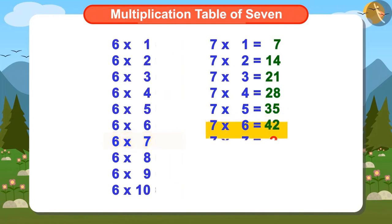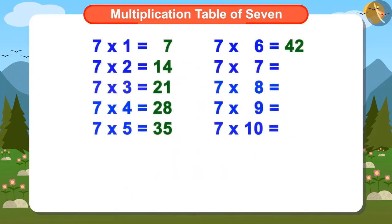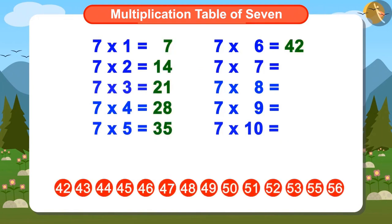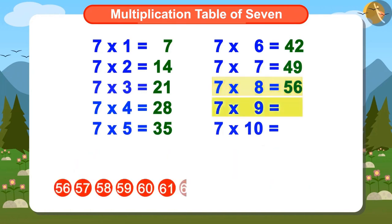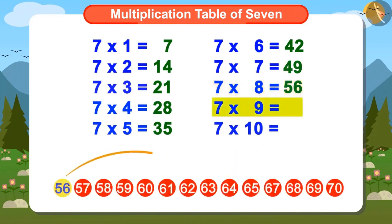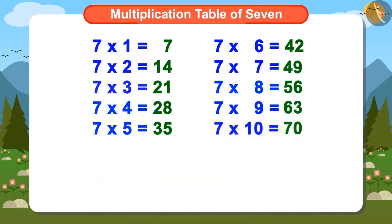Now let's find out 7 multiplied by 7. We will find it using the number line method — the 7th number after 42 is 49. 7 multiplied by 8 will be the 7th number after 49, that is 56. 7 multiplied by 9 will be the 7th number after 56, that is 63. And to know 7 multiplied by 10, we will find the 7th number after 63, which is 70. Now you have written the complete table of 7.